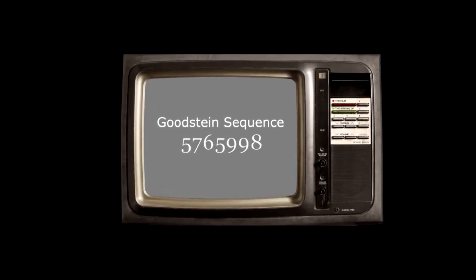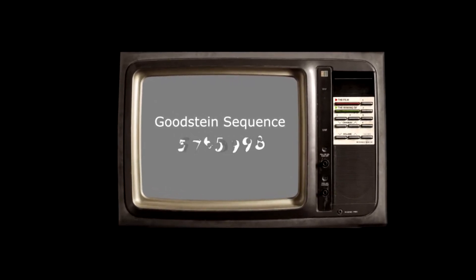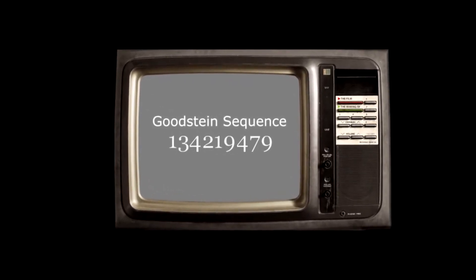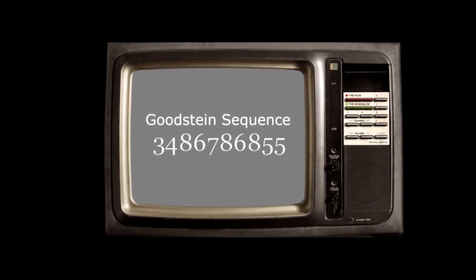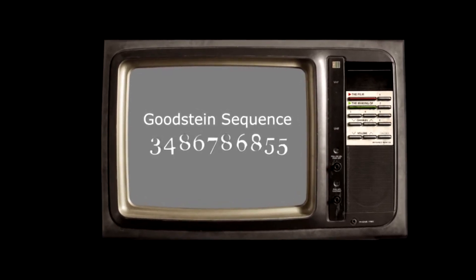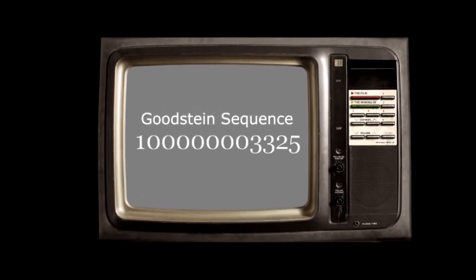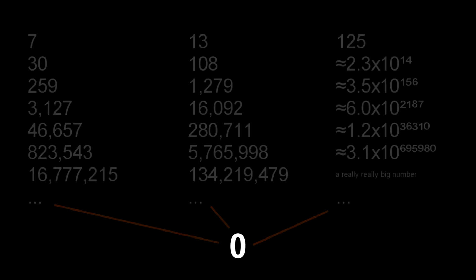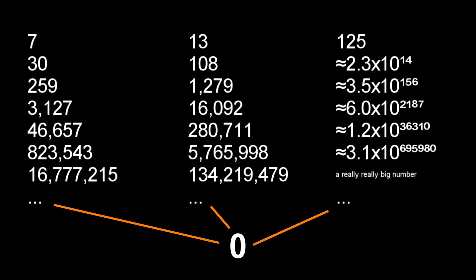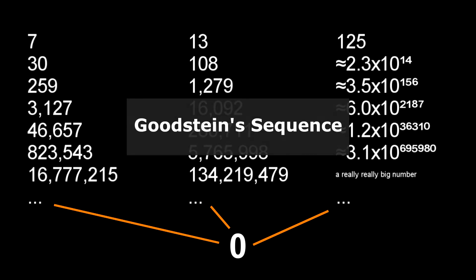Goodstein sequences can start with any number, and they appear to grow at an uncontrollable rate. However, they will all terminate at zero. In this video, we will attempt to define and prove this remarkable outcome.